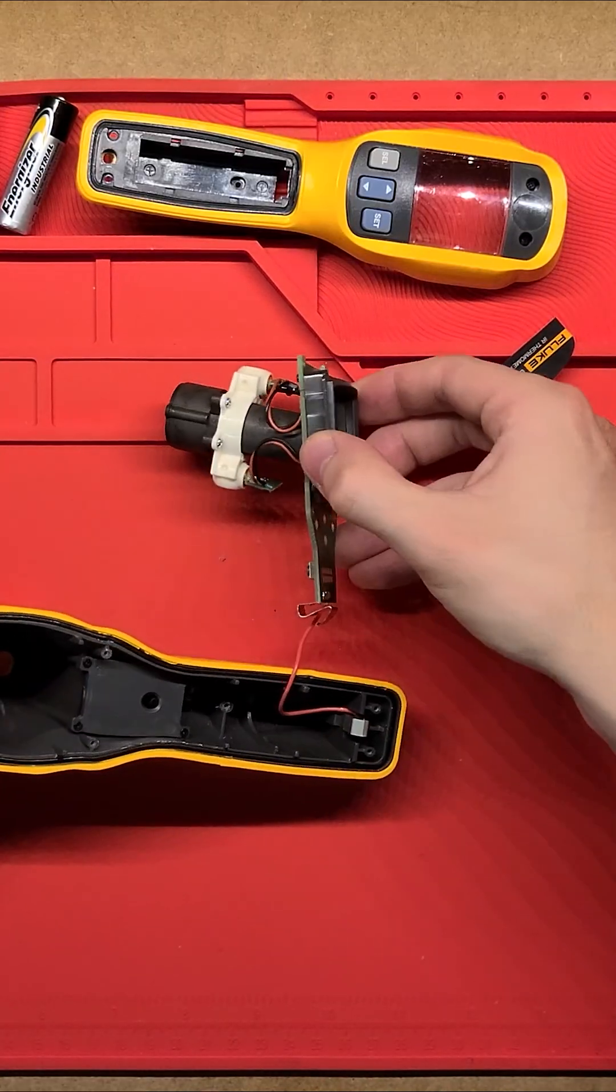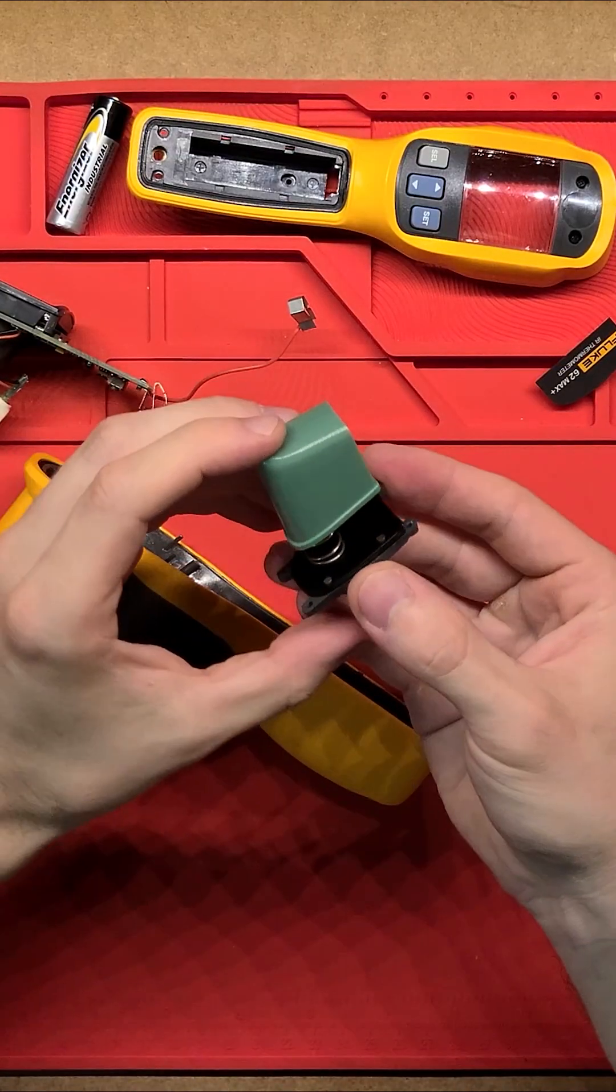Whole assembly actually just comes straight out. Trigger in there, the spring sits onto it and then just applies that pressure.